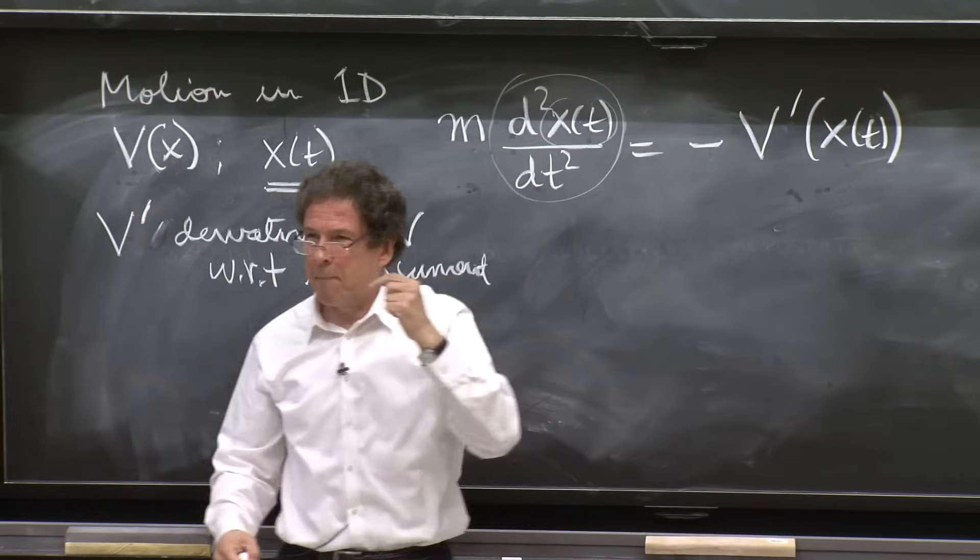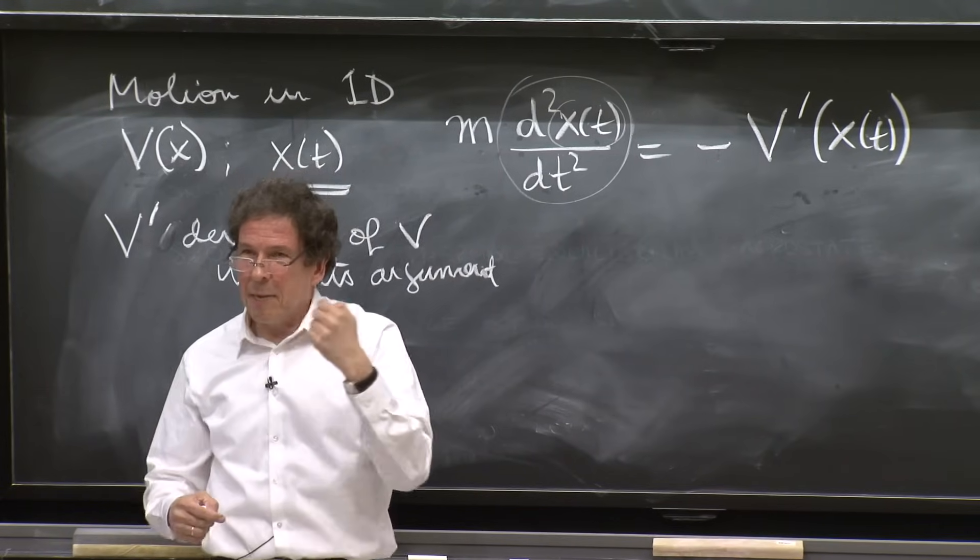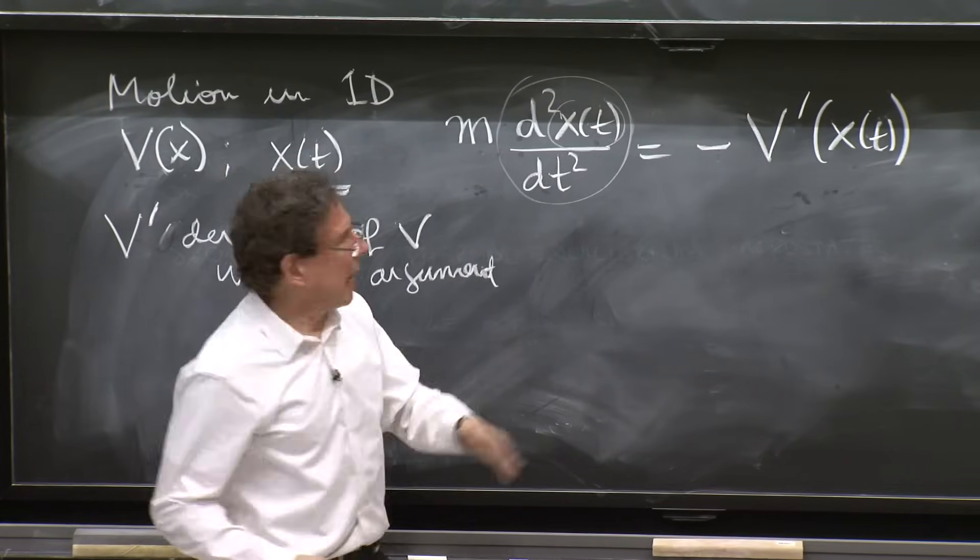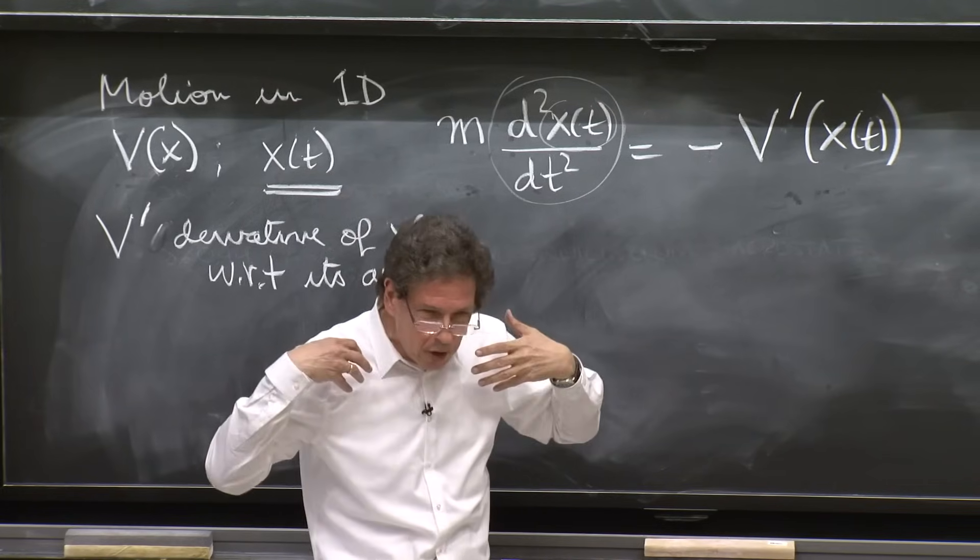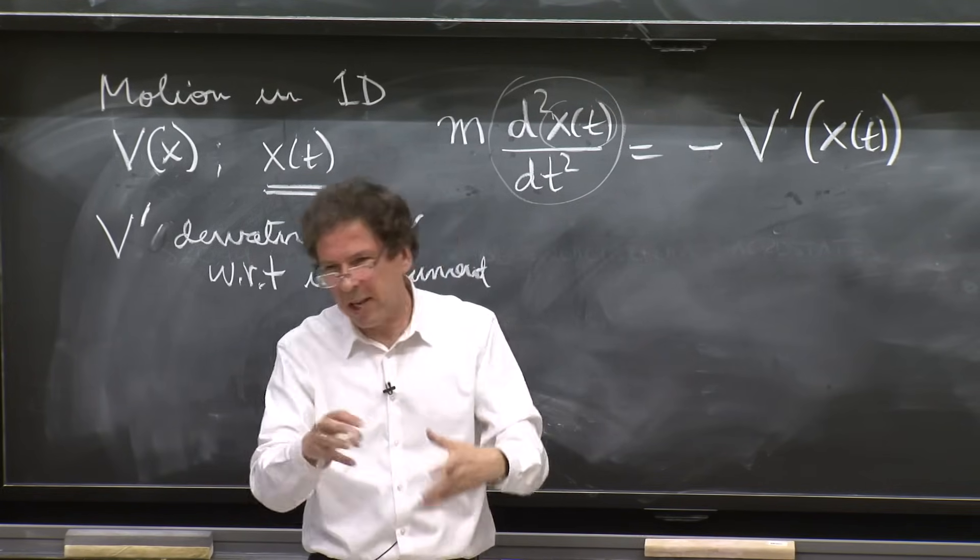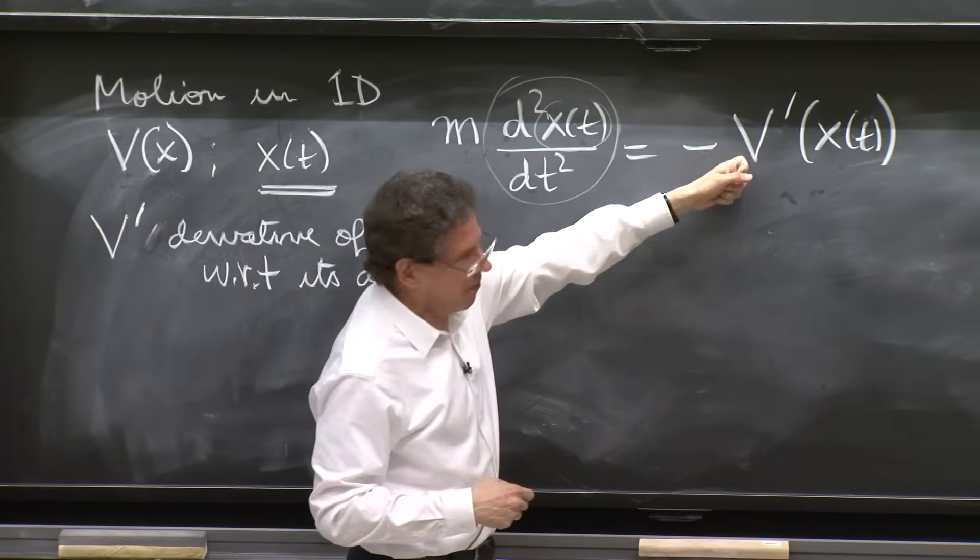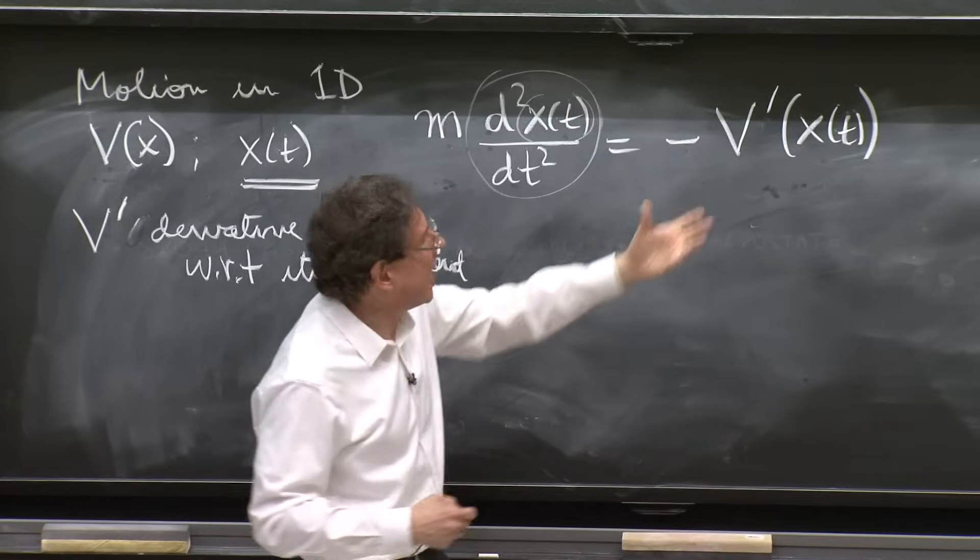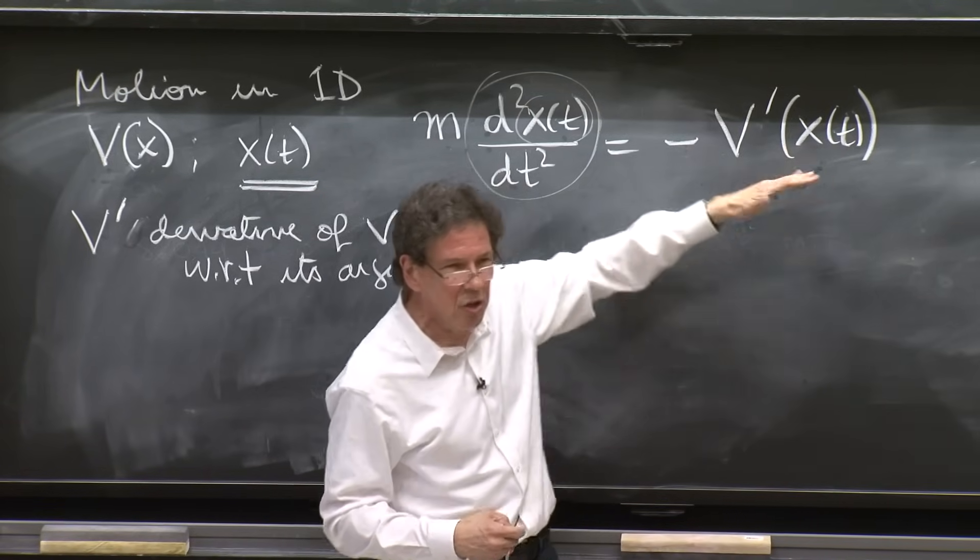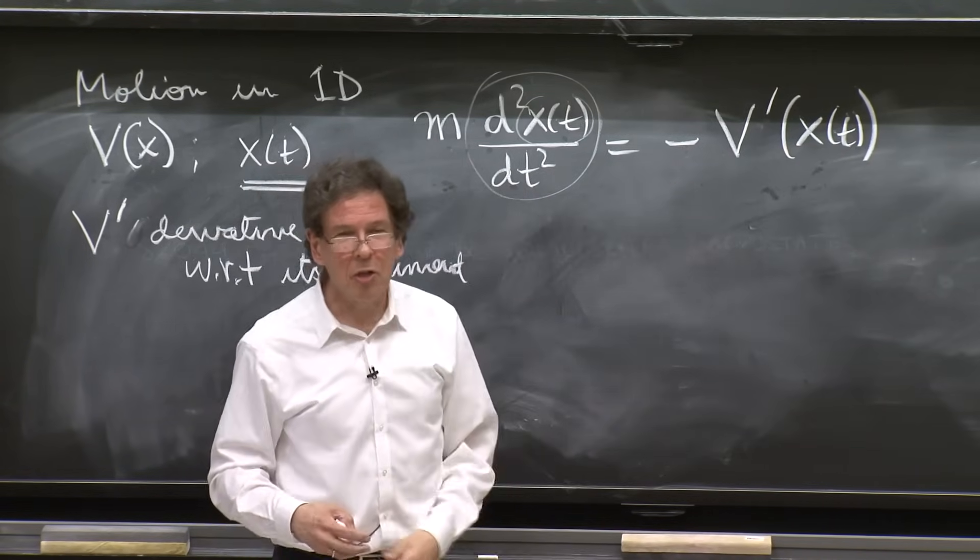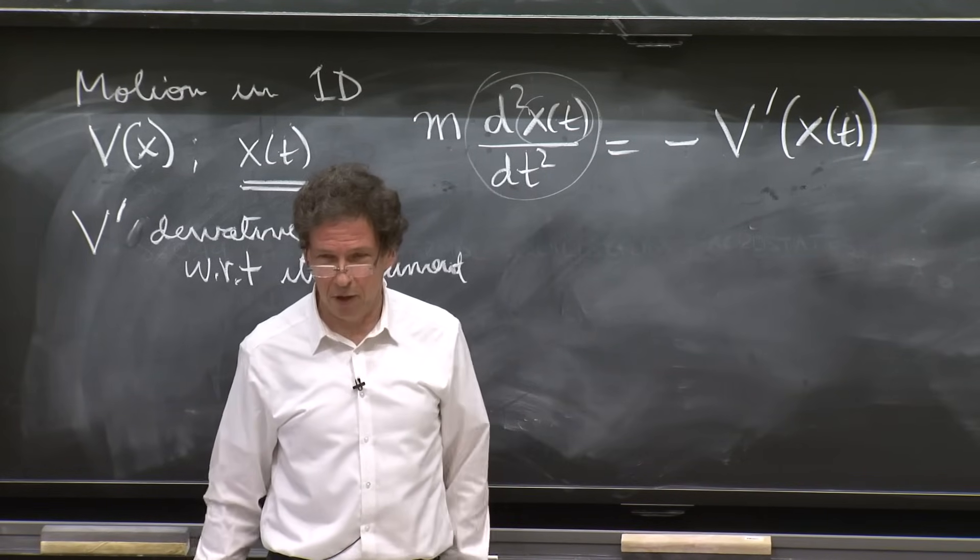But this side may not be linear, because a potential can be arbitrary. And the derivative, so suppose the potential is cubic in x. V of x goes like x cubed. Then the derivative of v goes like x squared. And x squared is not a linear function. So this Newton's equation is not a linear equation.